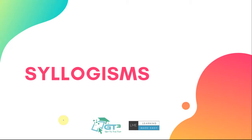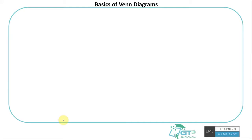So let's get started. Before we get into syllogisms, we need to have a decent understanding of Venn diagrams. We don't need to know a lot about it — we'll just talk about very basic things which would help you solve these questions. So first, let's try to understand the basics of sets.